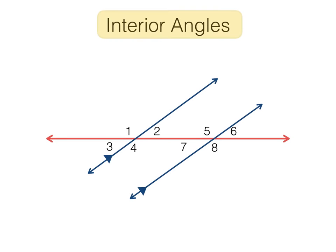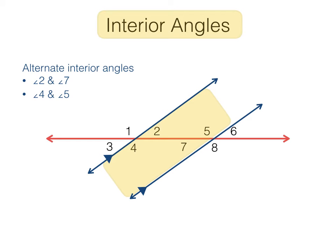There are four angles inside the parallel lines — we call these interior angles. There are two pairs of interior angles we're interested in: alternate interior angles and same-side interior angles. Alternate interior angles are on alternating sides of the transversal — one angle is high, one is low, one left and one right. Angles 2 and 7 are alternate interior angles, as are angles 4 and 5. Alternate interior angles are congruent; they have the same measure.